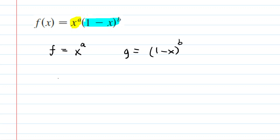We will also need the derivatives of these functions. The question noted that a and b are positive numbers, so when we do our derivatives we're going to use some power and chain rules. For f prime, we use the power rule — we simply drag a into the front, giving us a times x to the power of a minus 1. Remember, we subtract 1 from the original power.